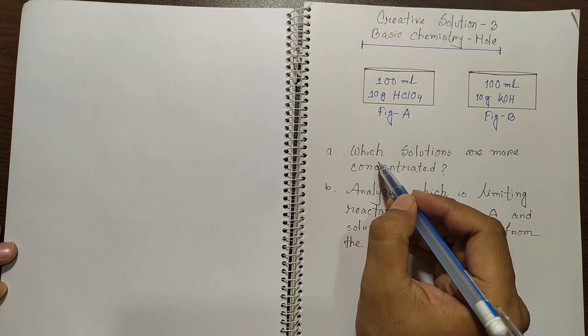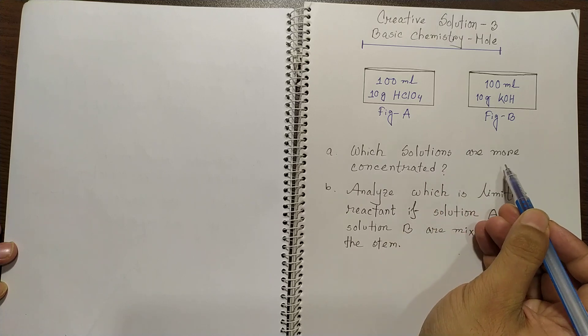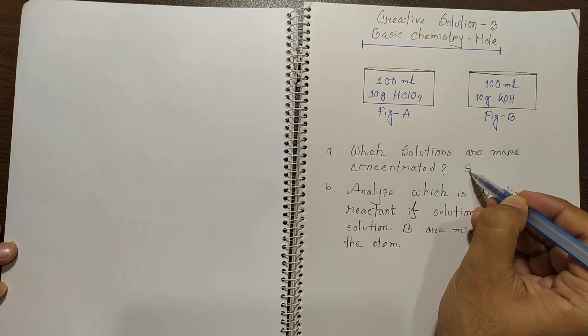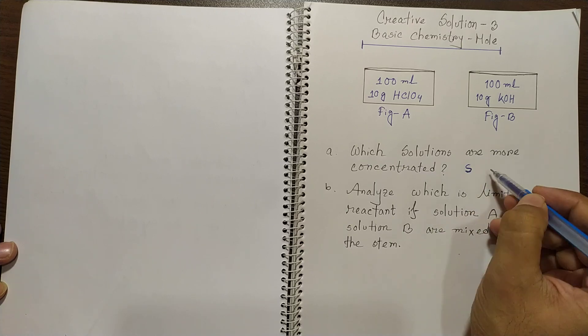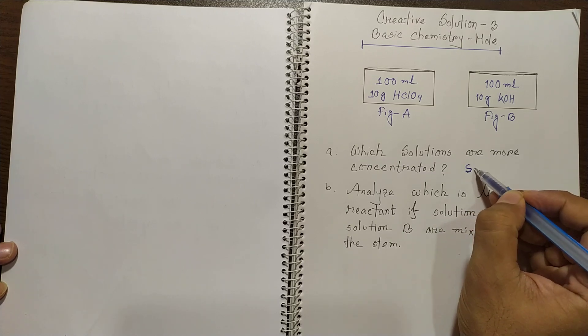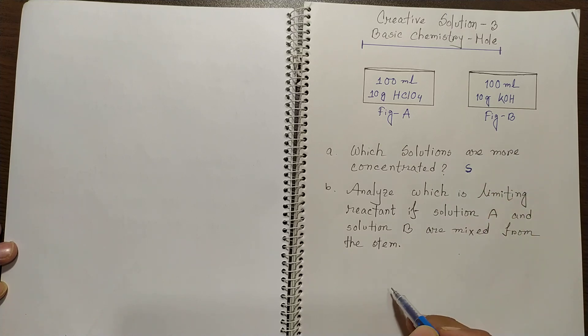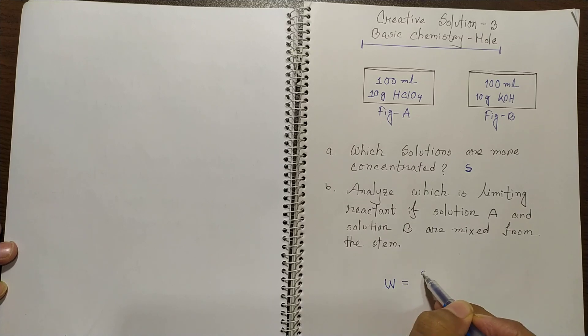The first question is which solutions are more concentrated. So we know that we need to find the molarity and to find this molarity we know the principle or the equation is W equals S V M over 1000, where V is the volume of the solution and should be in milliliter.